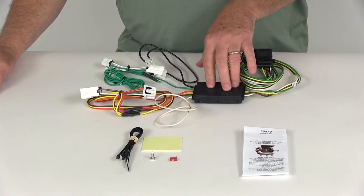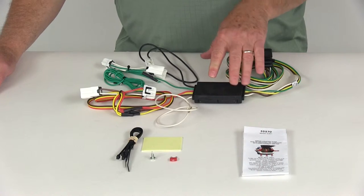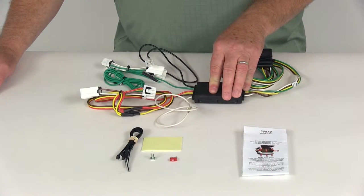A few specs on this harness. The maximum amperage for the stop and turn light circuits is 3 amps per circuit. For the taillight circuit, it's 7.5 amps total.